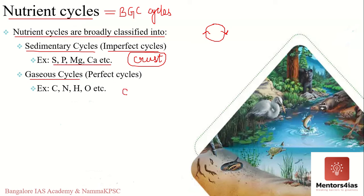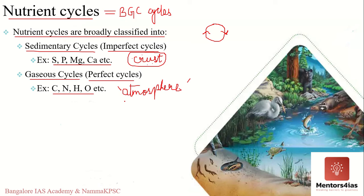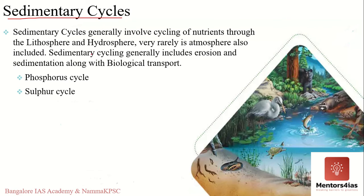The gaseous cycle is where the reservoir is the earth's atmosphere or the hydrosphere. The gaseous cycle is a perfect cycle because nutrients are replaced as fast as they are utilized. In sedimentary cycles, the reservoir is the earth's crust and nutrients can be locked away for millions of years, whereas in gaseous cycles the reservoir is the atmosphere or hydrosphere, making nutrients easily available. Therefore sedimentary cycles are imperfect cycles and gaseous cycles are perfect cycles. This video covers sedimentary cycles; the next video will cover gaseous cycles.